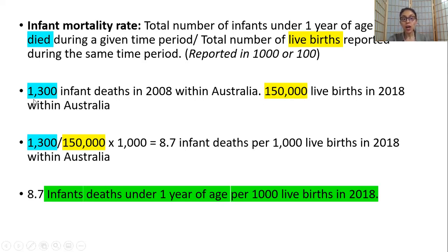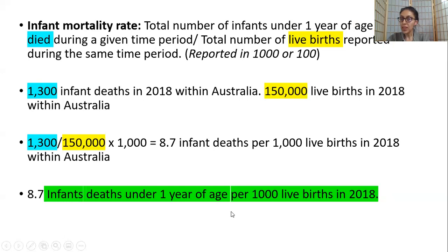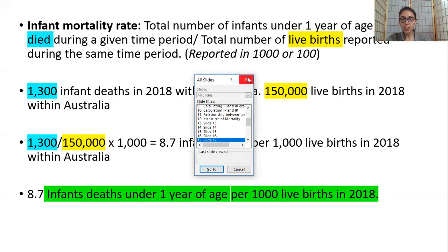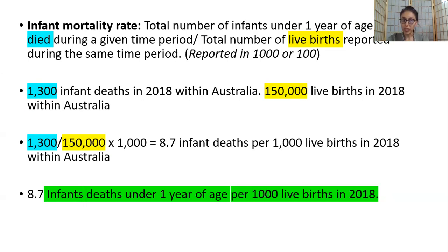The infant mortality rate is the number of infants under one year of age that have died in a given time period, divided by total number of live births in the same time period, generally reported in thousands or hundreds. For example, hypothetically in 2018 within Australia, 1,300 infants died and there were a corresponding number of live births. Dividing and multiplying by 1,000 gives 8.7 infant deaths per thousand live births in 2018 within Australia.